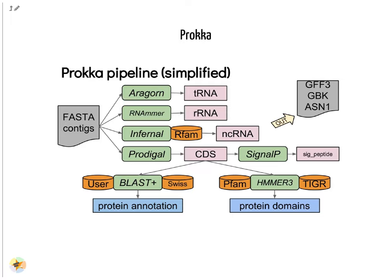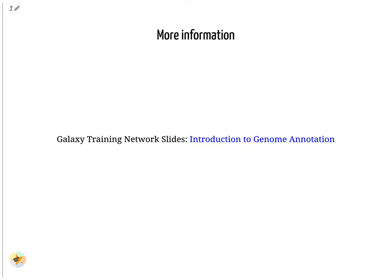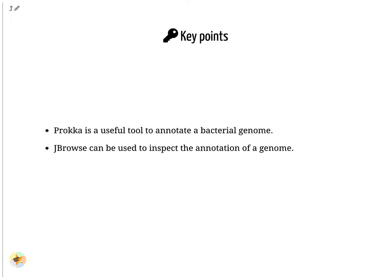SignalP is also run to detect signal peptides in each predicted coding sequence. The final result of the whole Prokka pipeline is a set of GFF3, GBK, and ASN1 files. More information is available in the introduction to genome annotation slides. Prokka is a useful tool to annotate a bacterial genome, and GBrowse can be used to inspect the annotation of a genome.